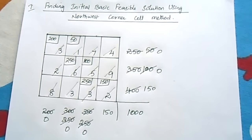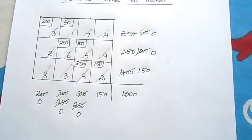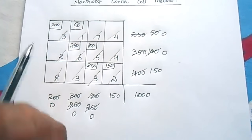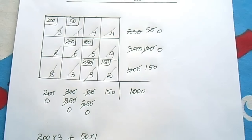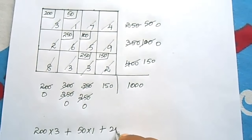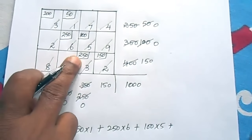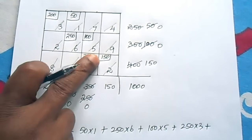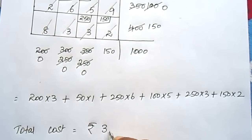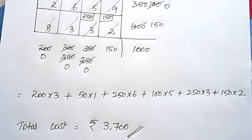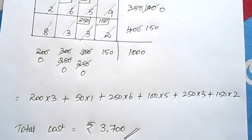According to the Northwest corner rule, the initial basic feasible solution allocations are: 200, 50, 250, 100, 250, and 150. The total cost of transportation is: (200×3) + (50×1) + (250×6) + (100×5) + (250×3) + (150×2) = ₹3700. The first phase is complete.